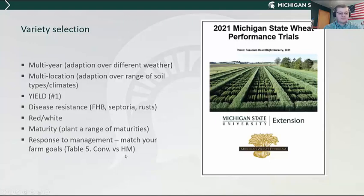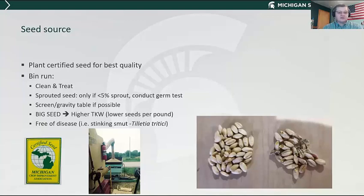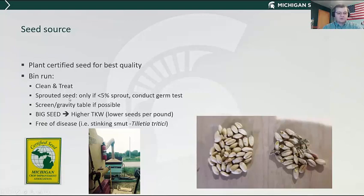As a source of seed, I recommend planting certified seed for best quality because it has been properly cleaned and treated and run across the gravity table, which sorts out smaller and damaged seed. If you're going to do bin-run seed, make sure you clean and treat it. This year we have quite a bit of sprouted seed in the countryside. Sprouted seed can be planted if you're below 5% sprout. Do a germination test to know the viability, and if you're at 90% viable seed, adjust your seeding rates 10% higher to account for that sprouted seed.